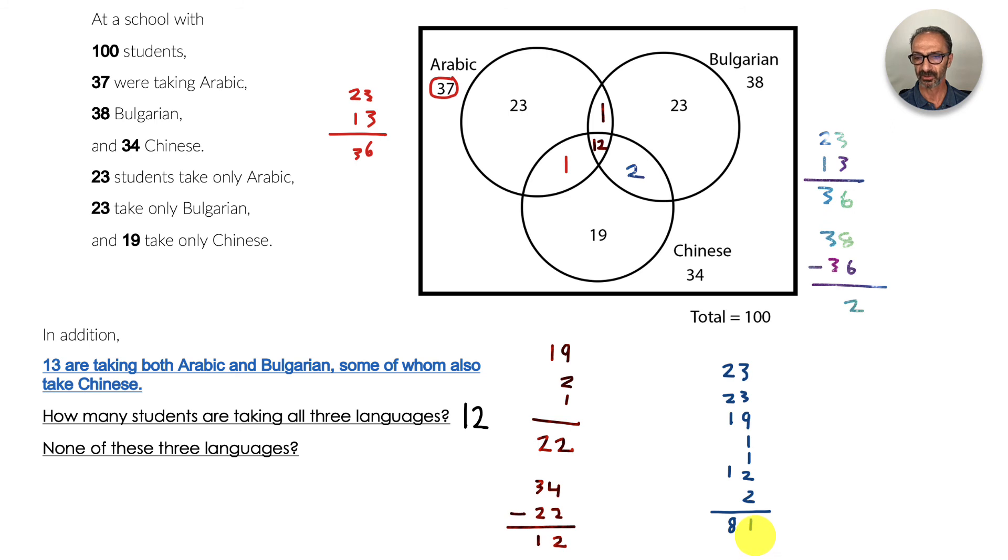We've come to the final answer. We have 100 total, 81 are taking languages - they're all over the place as you can see. What's the difference? The difference is 19. Using common sense, 100 minus 81 is 19, and that is the answer for the second part of the question.